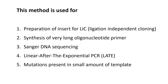This method is also used for detecting mutations present in a small amount of template. For example, if you have several copies of a template and a mutation is expected in only a single copy, you can perform asymmetric PCR to enrich that strand, and then use a molecular beacon probe to detect the mutation present in that sample.